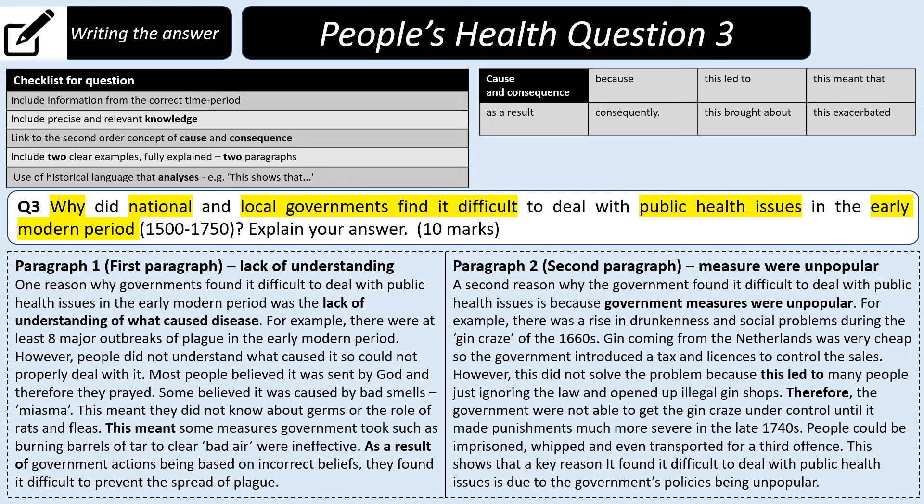Paragraph one: 'One reason why governments found it difficult to deal with public health issues in the early modern period was the lack of understanding of what caused disease. For example, there were at least eight major outbreaks of plague in the early modern period. However, people did not understand what caused it, so they could not properly deal with it. Most people believed it was sent by God and therefore they prayed; some believed it was caused by bad smells — miasma. This meant that they did not know about germs or the role of rats and fleas. This meant that some of the measures government took, such as burning barrels of tar to clear bad air, would have been ineffective. As a result of government actions being based on incorrect beliefs, they found it difficult to prevent the spread of plague.'